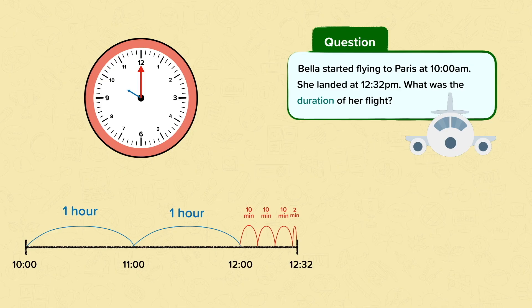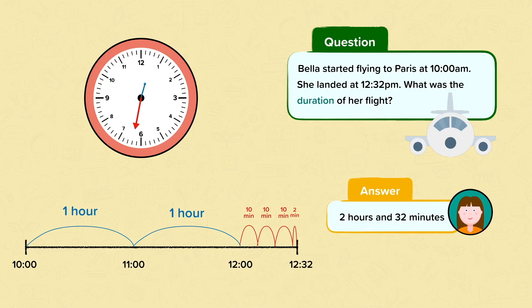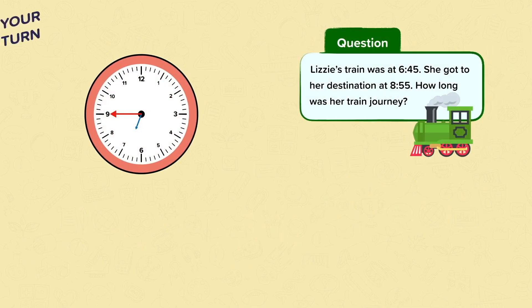And then 2 more minutes. In total we counted 32 minutes. We need to add this to the number of hours. So it's 2 hours and 32 minutes. The duration of Bella's flight was 2 hours and 32 minutes long.